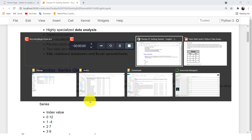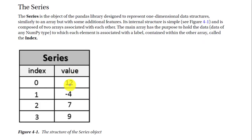I will show you here a table. If you have one-dimensional data like this — 12, minus 4, 7, 9 — this is one-dimensional data. It may be one row, maybe a column, maybe a vector. This is your data; it is the main array.